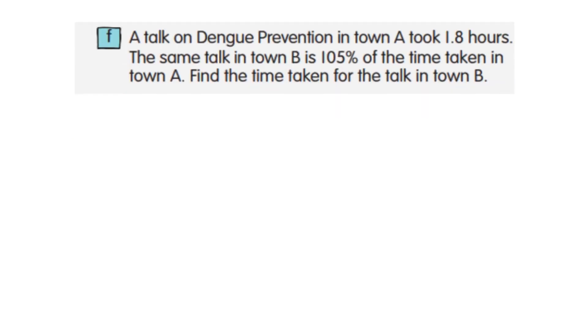Question F: A talk on Dengue Prevention in Town A took 1.8 hours. A similar talk in Town B is 0.5% of the time taken in Town A. Find the time taken for the talk in Town B. 0.5% of the time taken in Town A.